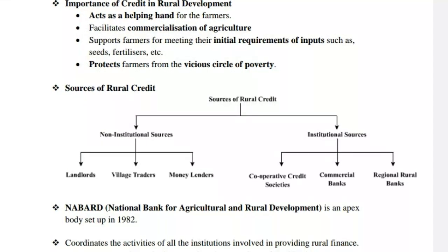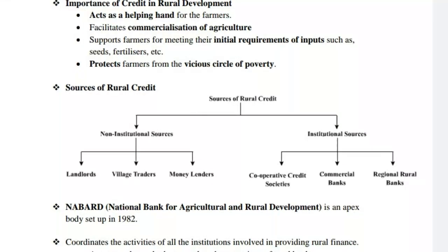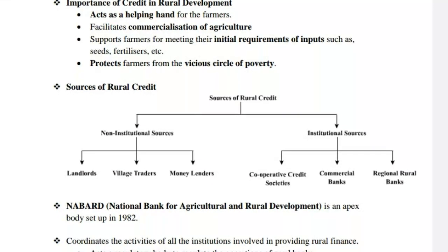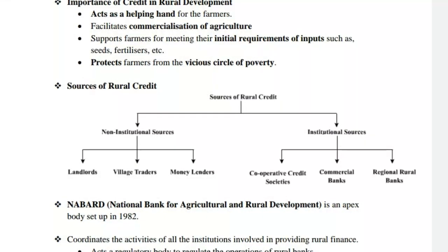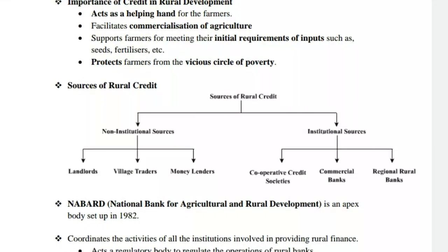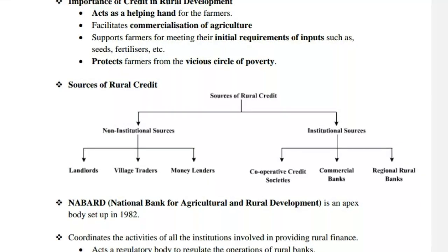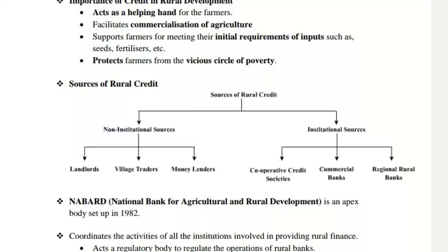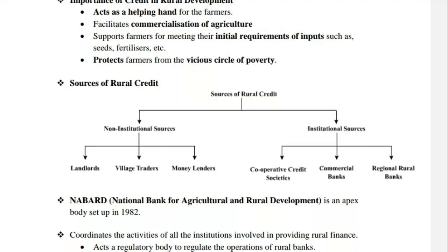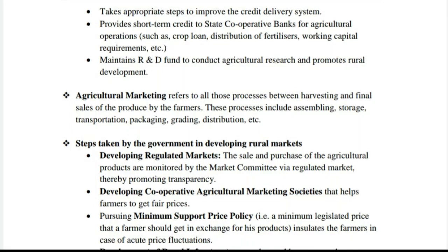Sources of rural credit. NABARD — National Bank for Agricultural and Rural Development — is an apex body set up in 1982. It coordinates the activities of all institutions involved in providing rural finance and acts as a regulatory body to regulate the operations of rural banks. It also takes appropriate steps to improve the credit delivery system.